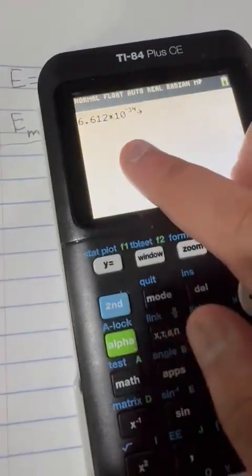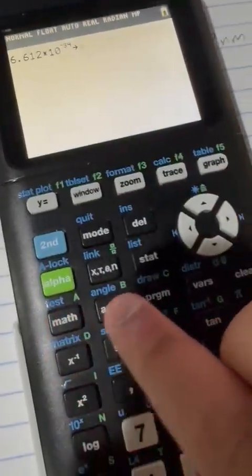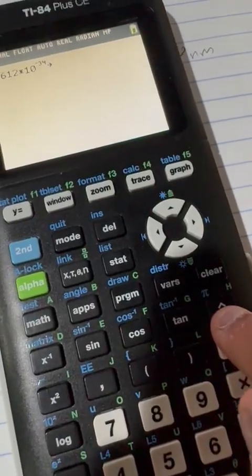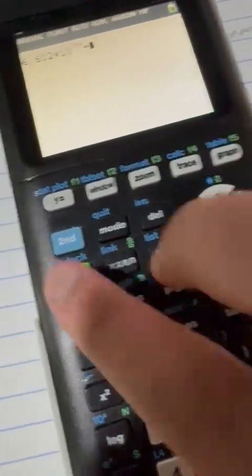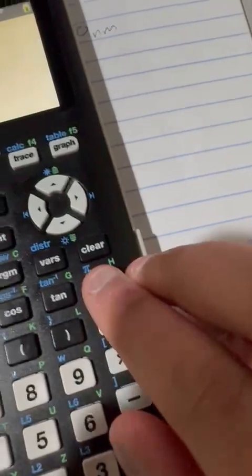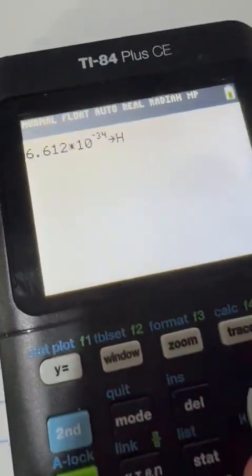Click that, and now we can choose a letter. See how we have all of these letters? Now, the Planck constant is H, so I'm going to use H. So I click alpha, H, and now it should store.